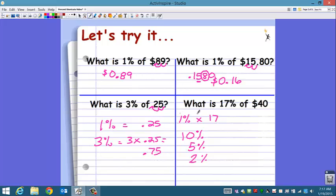Okay, let's see. I'm going to just go with the first. So $40, 1%, decimal point. Move it two places. So 1% is going to be 40 cents. Multiply that by 17, and what do you get? $6.80.